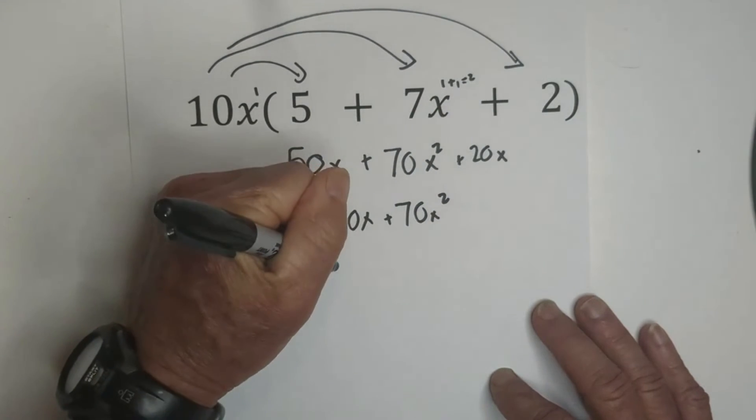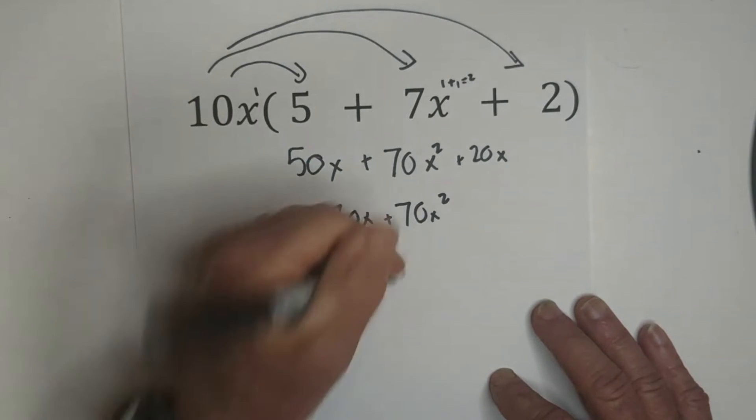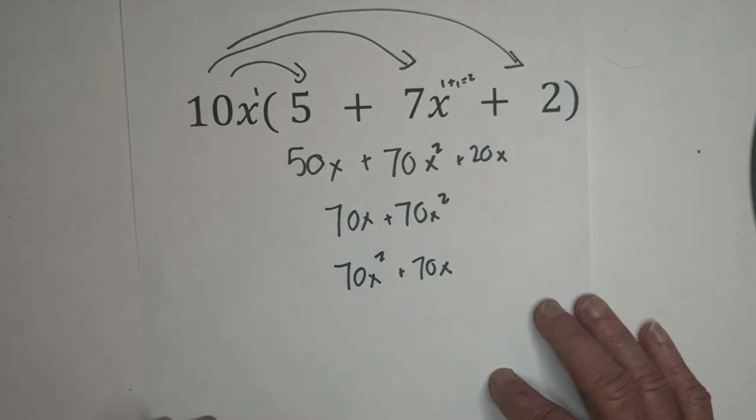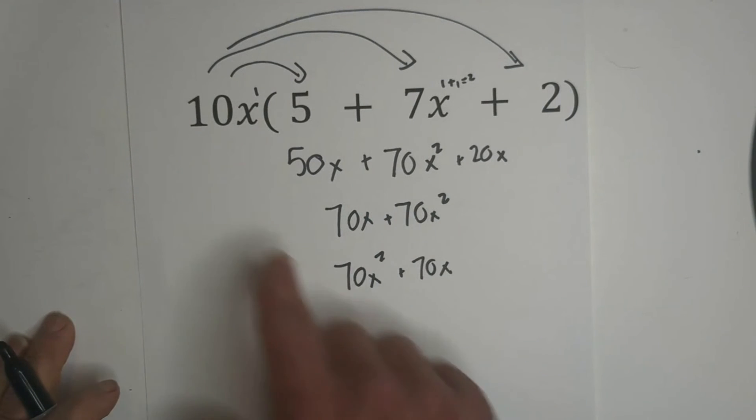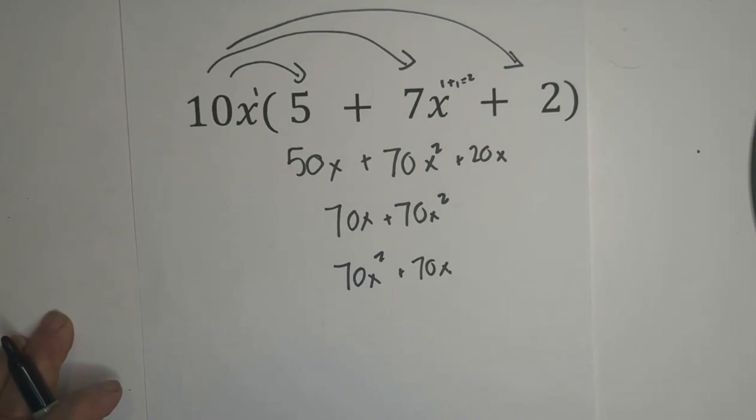Let's go ahead and write it in descending order. So we have 70x squared because we're doing it based on the exponent plus 70x. I hope that was helpful in distributing using the distributive property with variables and exponents. Thanks for watching.